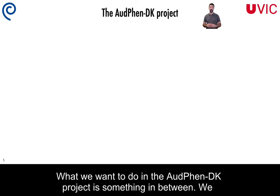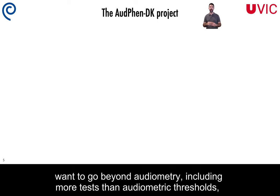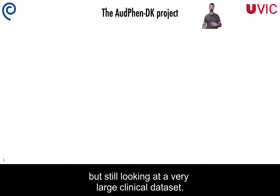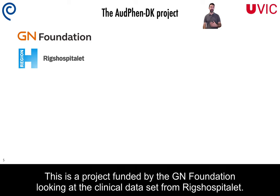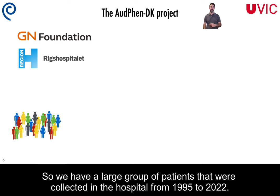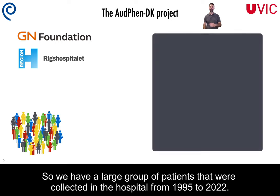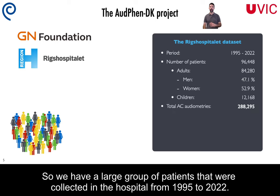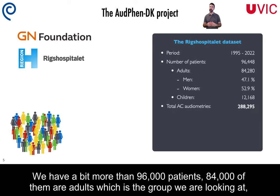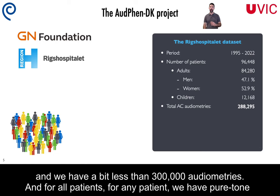What we are doing in the Alphen DK project is something in between. We want to go beyond audiometry, including more tests than audiometric thresholds, but still looking at a very large clinical dataset. This is a project funded by the Aegean Foundation, looking at the clinical dataset from this hospital. We have a large group of patients collected in the hospital from 1995 to 2022 — a bit more than 96,000 patients, 84,000 of them adults.